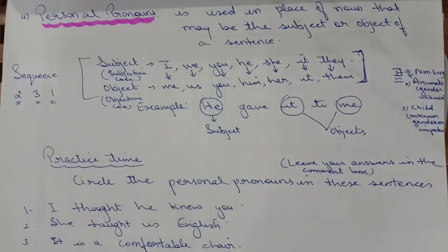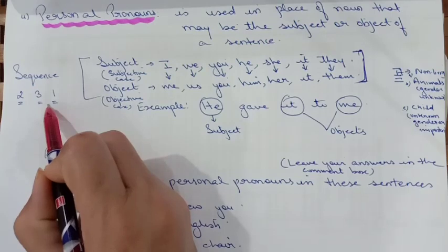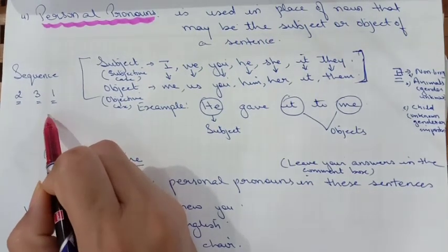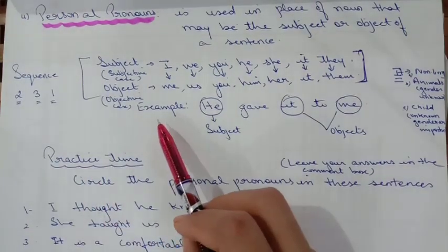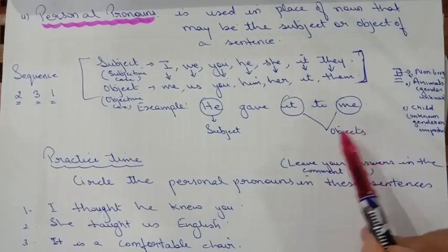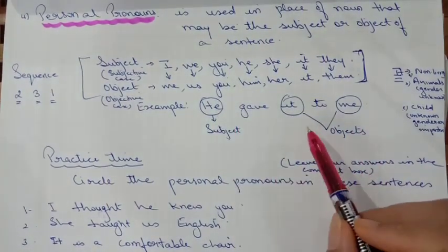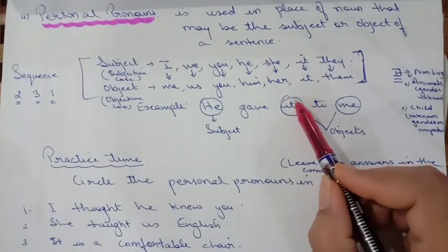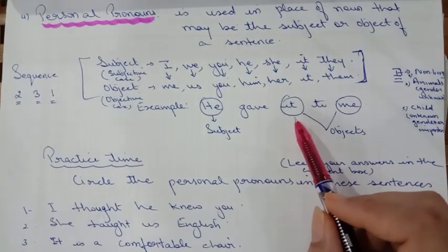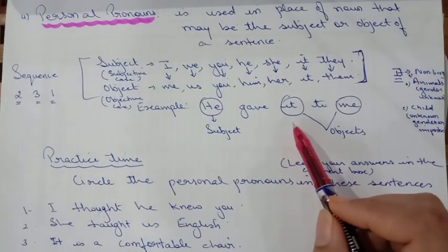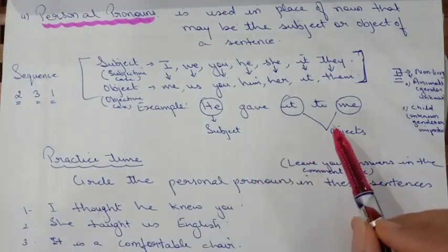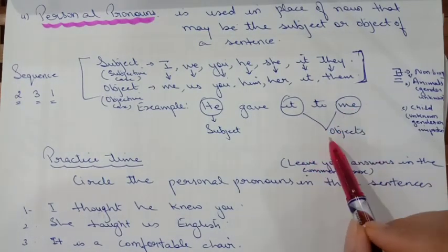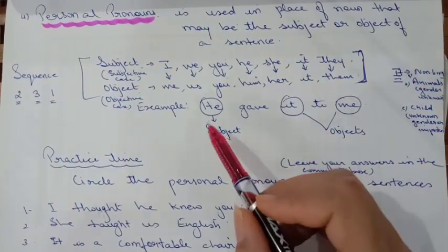When you are talking, kindly make sure the sequence: the second person will come first, then the third person, and then the first person. This should be the sequence when you are talking about persons in a sentence — second person, third person, first person. See the example: 'He gave it to me.' He is the subject. 'It' and 'me' — 'it' is used for non-living things, and both 'it' and 'me' are two objects here, while 'he' is the subject. You may get two objects in a sentence.